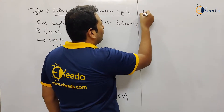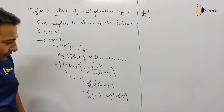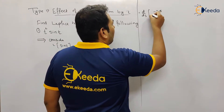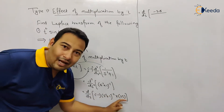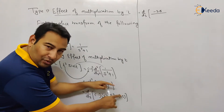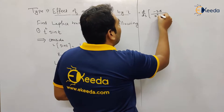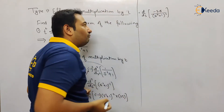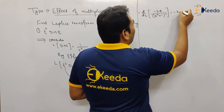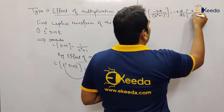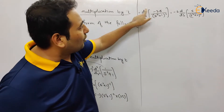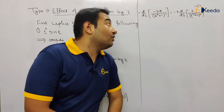So this equals d/ds of minus 2s upon (s²+1) squared. We can take minus 2 outside the derivative as a constant, leaving us with d/ds of s upon (s²+1) squared.